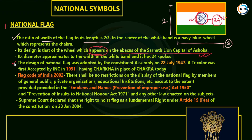The basic design of the national flag was adopted by the Constituent Assembly on 22nd July 1947 — this is an important date. This tricolor was first accepted by the Indian National Congress in 1931, having the Charkha in place of the Chakra. So earlier in 1931, there was Charkha; now there is Chakra with 24 spokes.